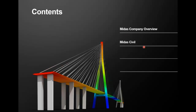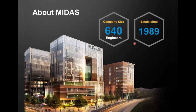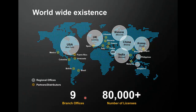Our company has a fantastic team of 640 engineers working all around the globe. Midas was established since 1989 and has a worldwide presence with nine branch offices including USA, UK, Russia, China, and Korea. Over 80,000 plus licenses have been sold worldwide and we have partners and distributors throughout the globe.